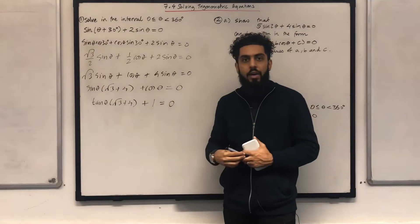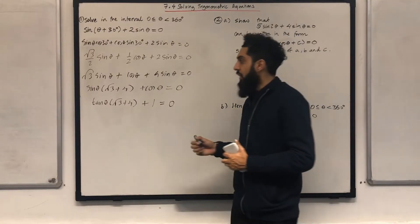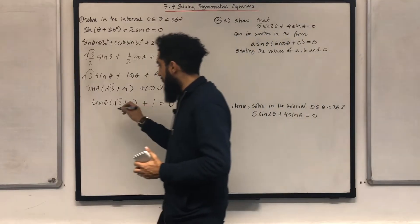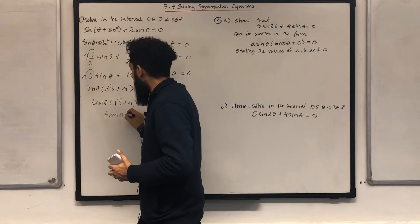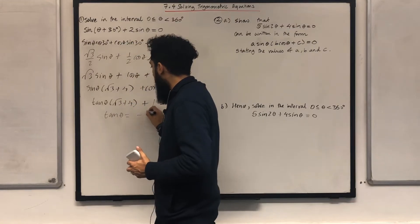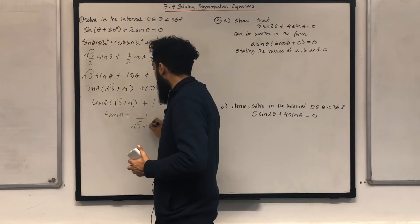My target is to make tan theta the subject. If I make tan theta the subject, I obtain tan theta equal to minus 1 over square root 3 plus 4.